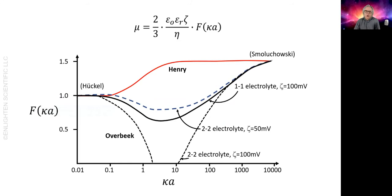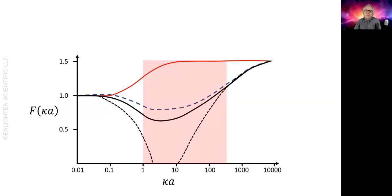There's quite a discrepancy when you're in the middle region of κa. You can see that in this region, the calculated zeta potential will be underestimated if you use the Huckel, Henry or Smoluchowski equations.